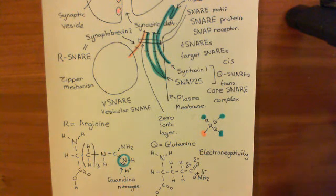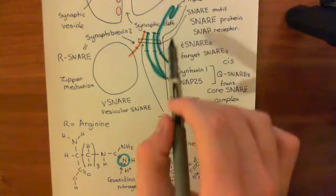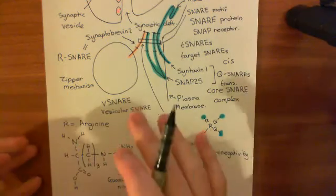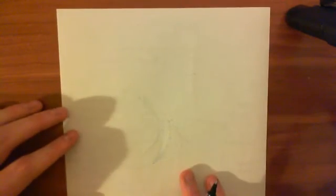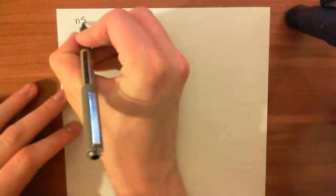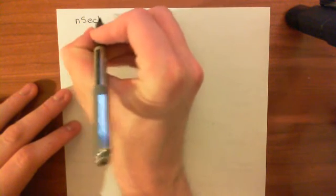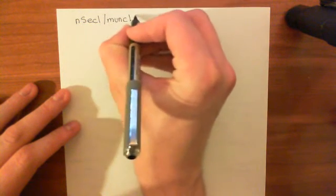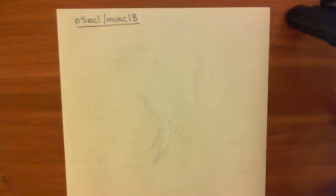What I now want to discuss is another protein that's important in the formation of these core SNARE complexes. This protein is known as NSEC1, which has another name: it's also known as MUNC18.